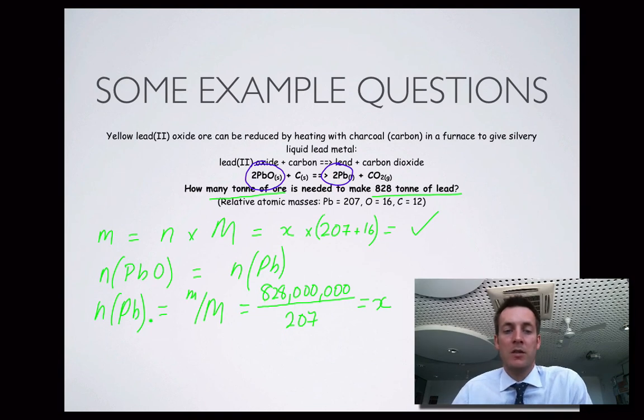But that's equal to the number of moles of lead in this equation, because they're both two. So then I find the number of moles of lead by using the mass that I'm given and its molar mass to find the number of moles. Plug that into here, whatever the formula is here, and use it to find the number of moles of lead oxide.